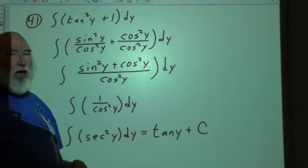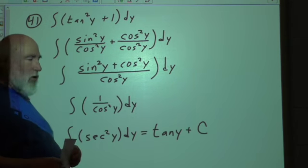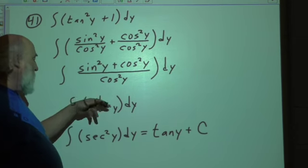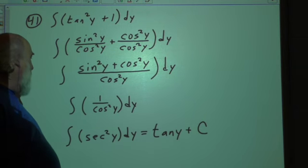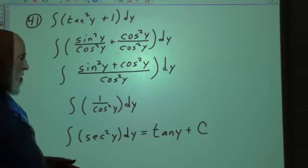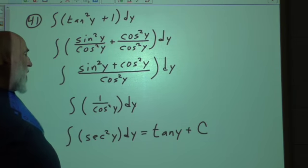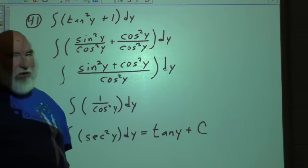And that is a big deal. You're going to have to know some of your basic fundamentals of trigonometry. Okay? And cosine squared stays down there. And that becomes secant squared y. And sure enough, we do have a secant squared in that column. And that is tangent of y plus the indefinite C.